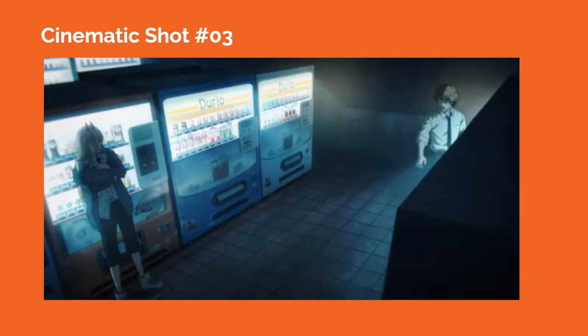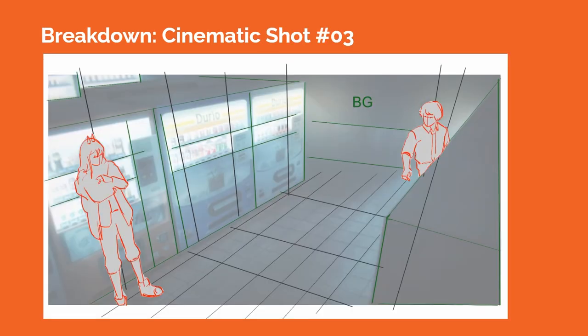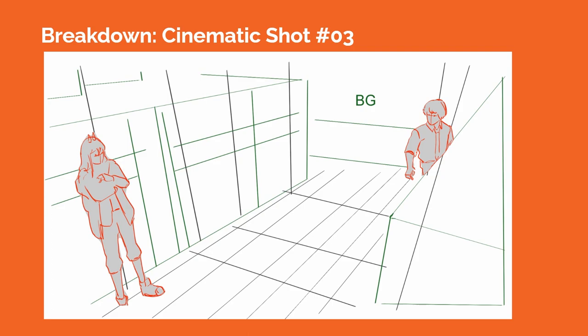In cinematic shot number three, the camera is placed high above the characters tilted downward with a wider lens to create a down shot. We see the perspective lines formed by the vending machines creating a three-point perspective grid. Power and Denji are staged at opposite ends of the frame, possibly implying some emotional and relational distance between them at this point in the story. Most of the lighting still comes from the artificial light in the vending machines, helping to create a slightly surreal feel inside this space.